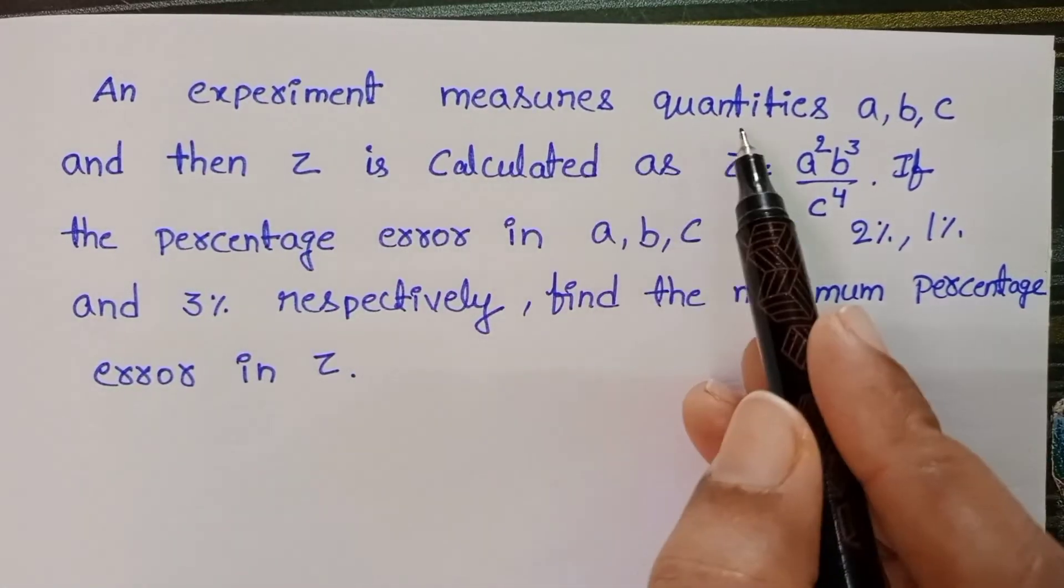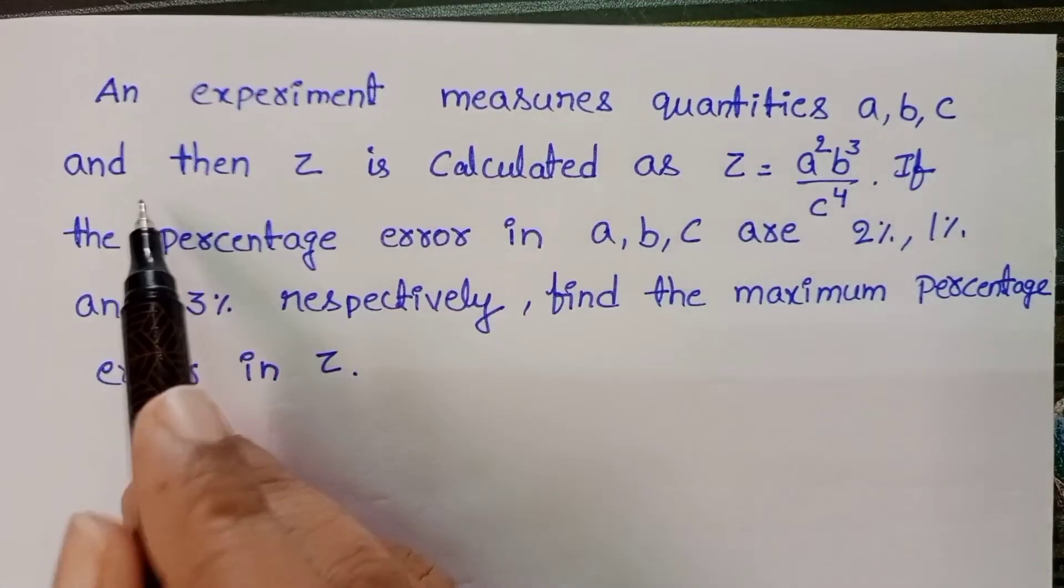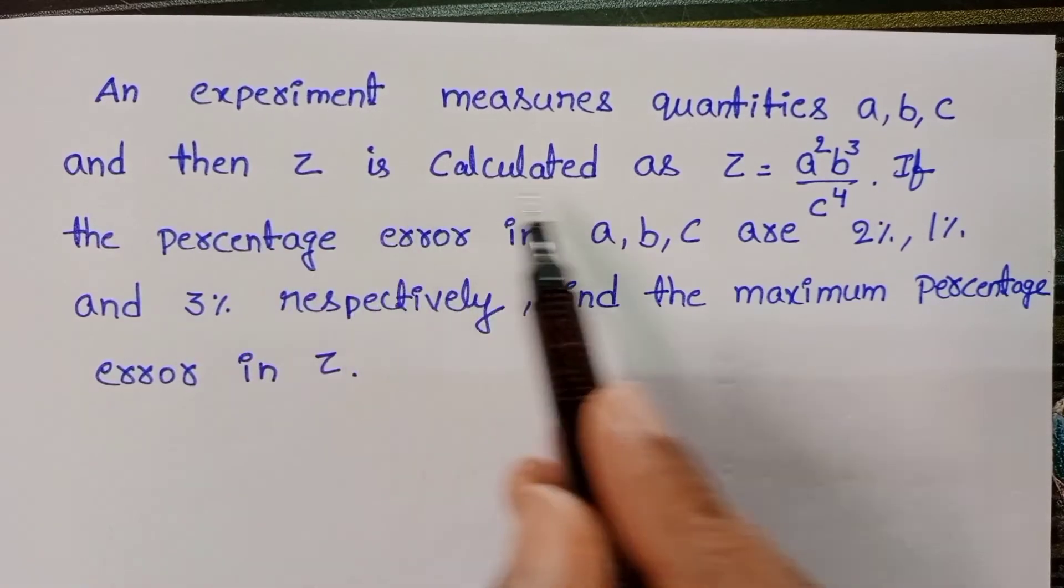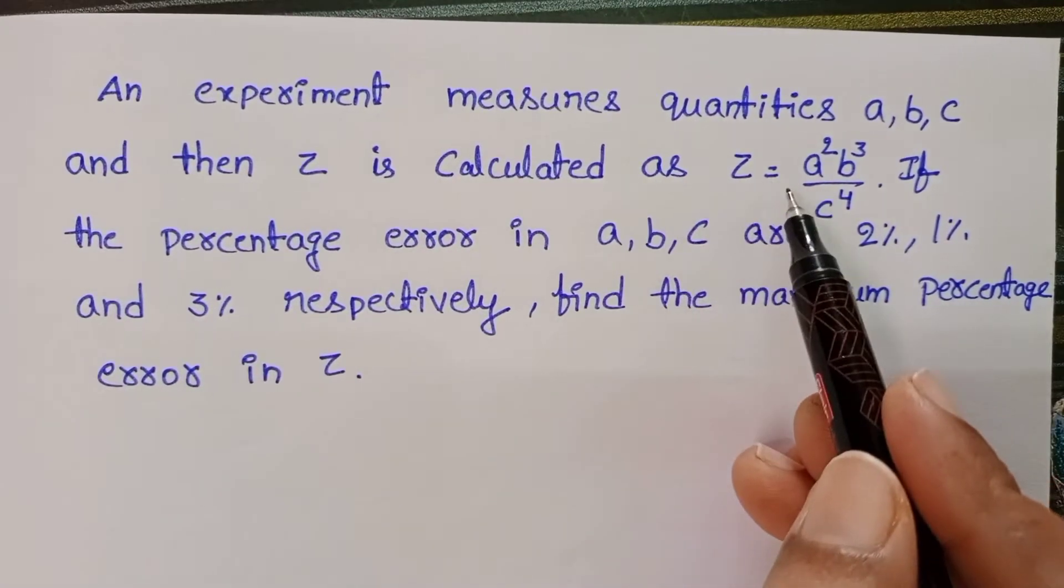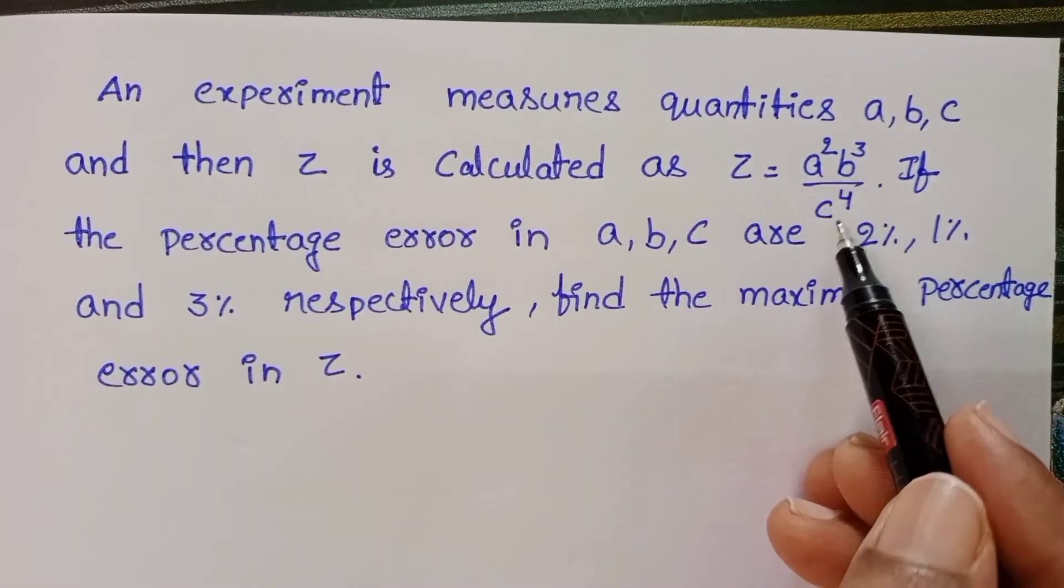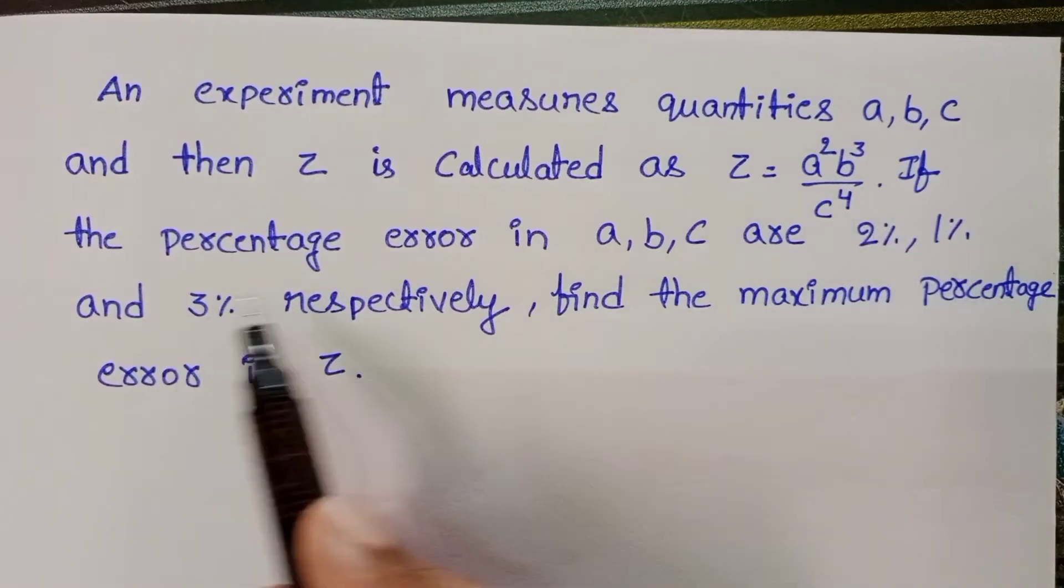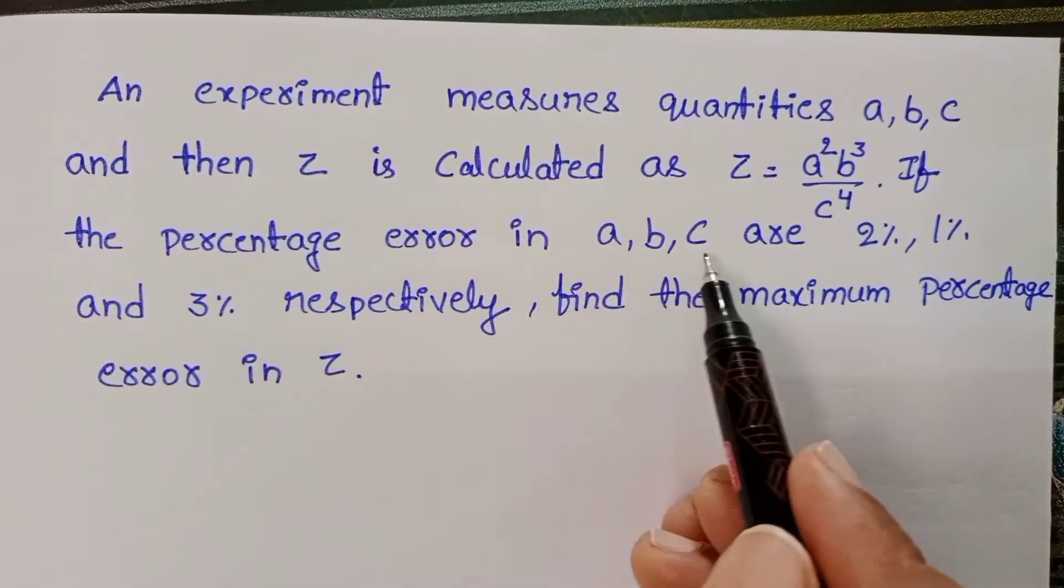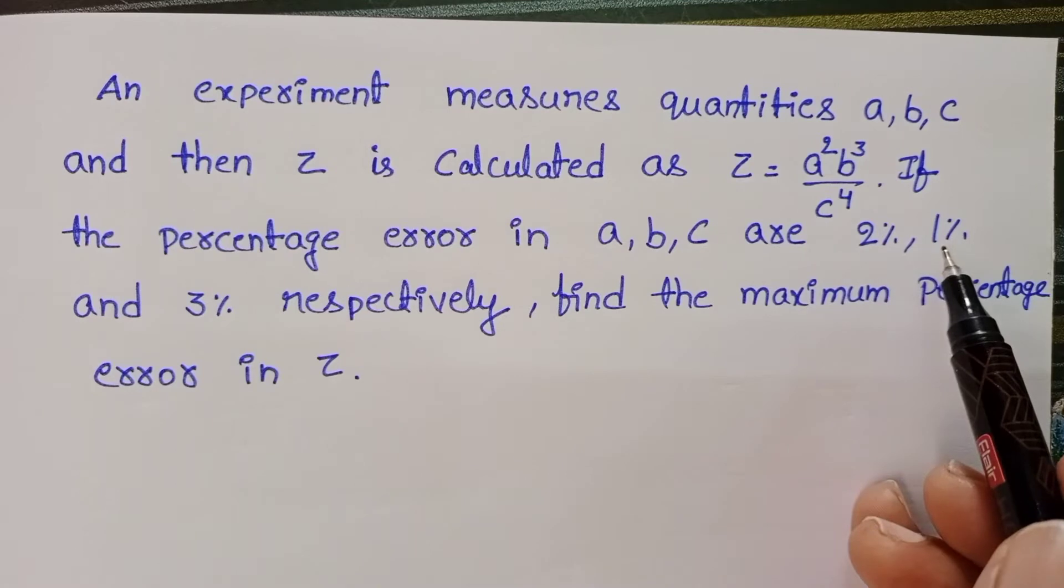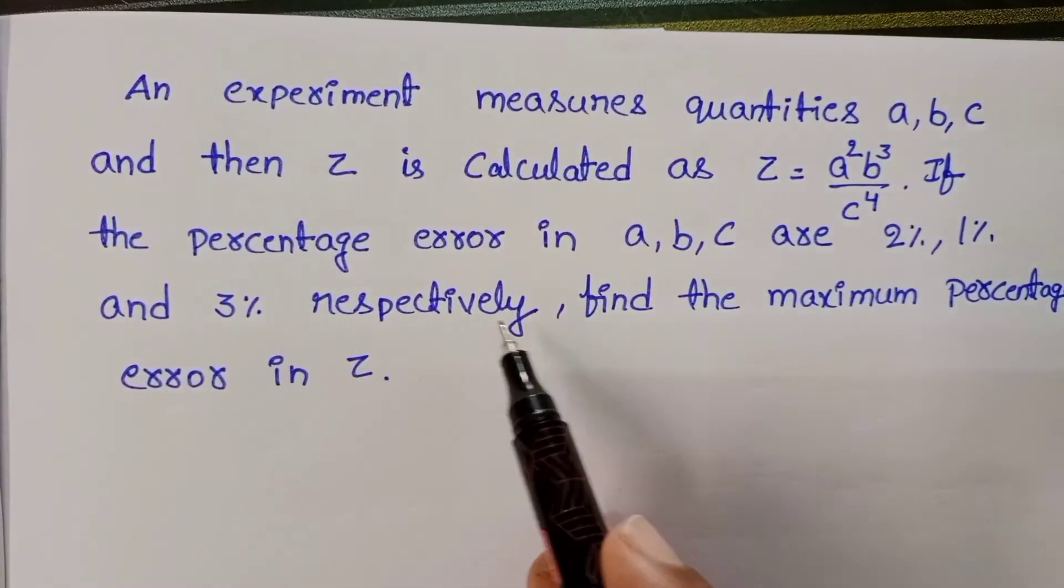An experiment measures quantities A, B, and C, and then Z is calculated as Z equals A squared B cubed by C to the power 4. If the percentage error in A, B, C are 2%, 1%, and 3% respectively,